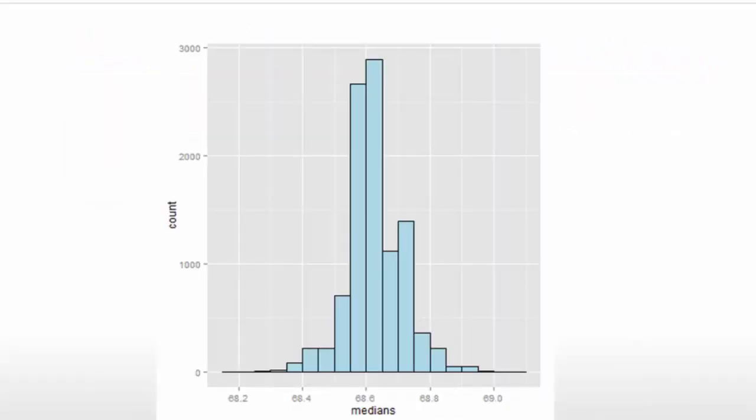So this plot is an estimate of the sampling distribution of the median. If we had the true population distribution, and we were to sample over and over again, this would be a very good estimate, up to Monte Carlo error, of the sampling distribution of the median. Instead, we don't have the exact population distribution. We've replaced it with the bootstrap principle of resampling from the observed data. And now instead we just get this approximate sampling distribution of the median.